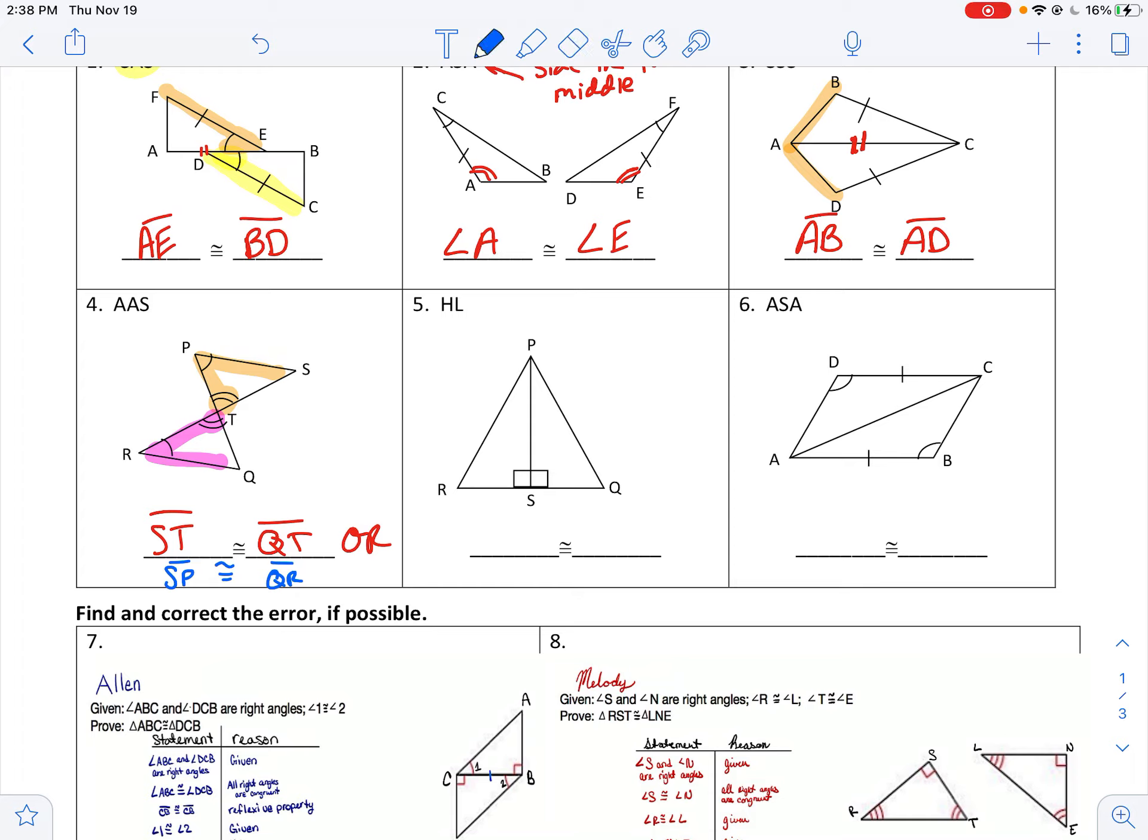All right, again, hypotenuse-leg. I can assume reflexive sides. I've got a leg. This is a leg. In each triangle, where's my hypotenuse then? So I have the leg. I don't need the leg anymore. I need the hypotenuse across from the right angles. RP and QP.